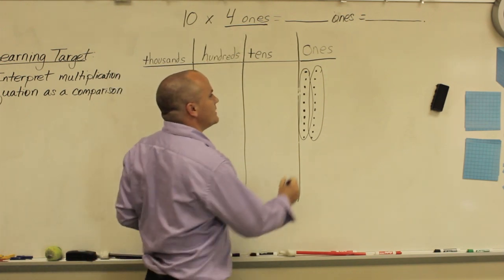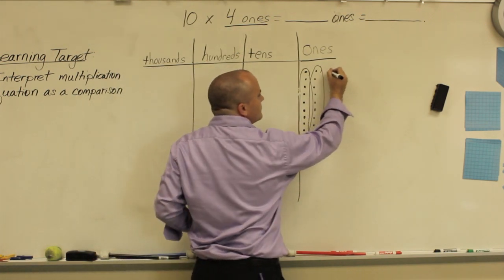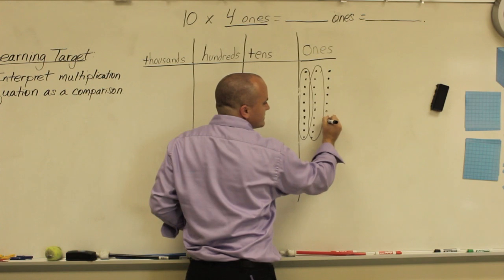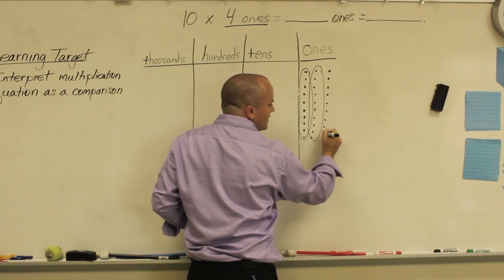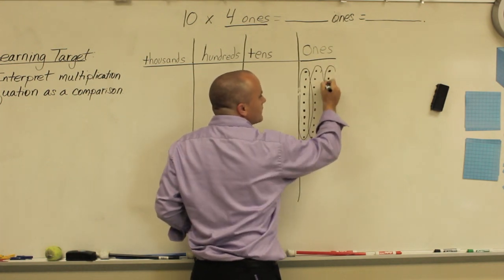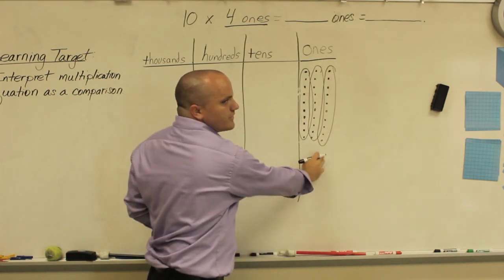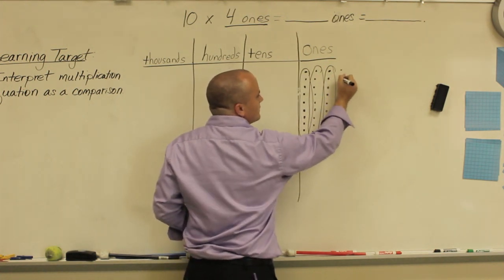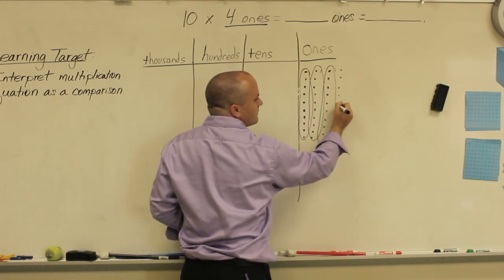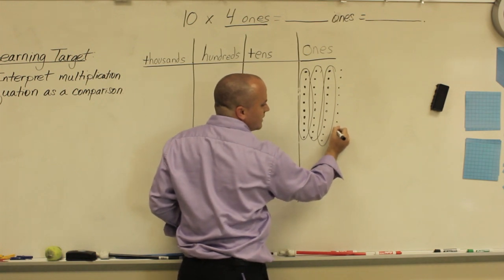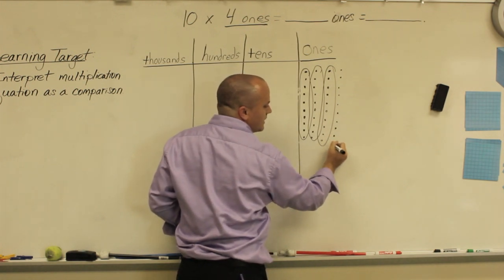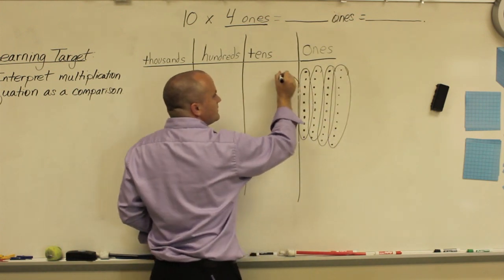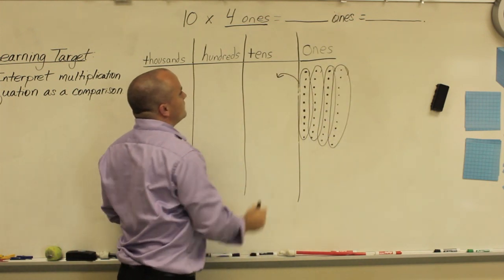I still have to get to four, so I need another group of ten ones — three, four, five, six, seven, eight, nine, and ten. Let me circle that. I have three. I have one more to go because I need four sets. So one, two, three, four, five, six, seven, eight, nine, ten. So now I have my groups of ten ones.